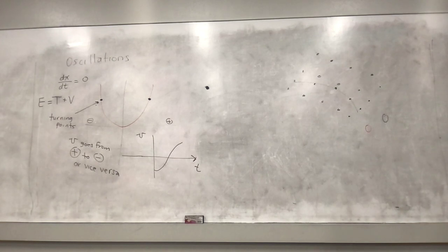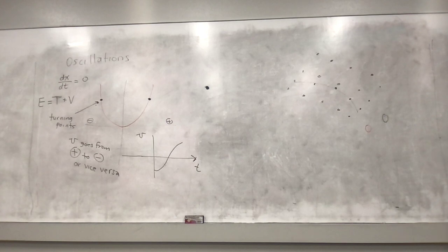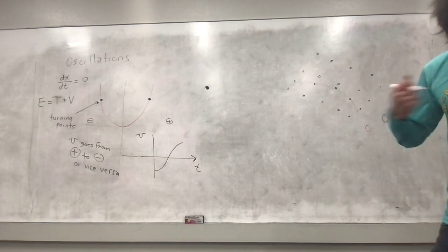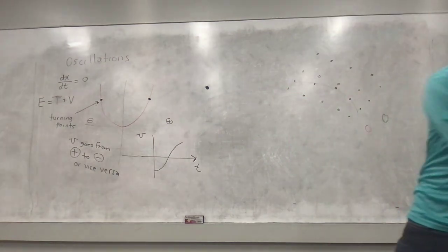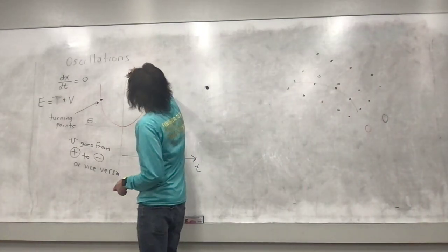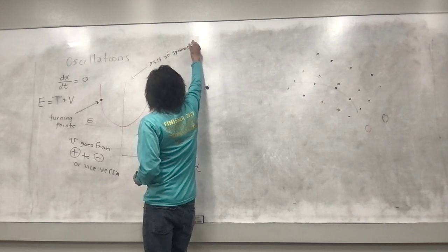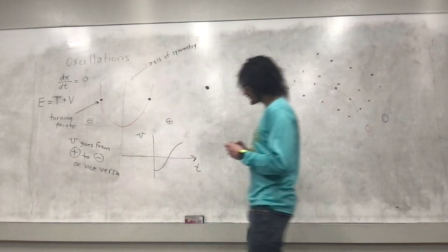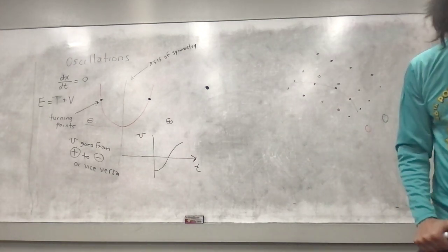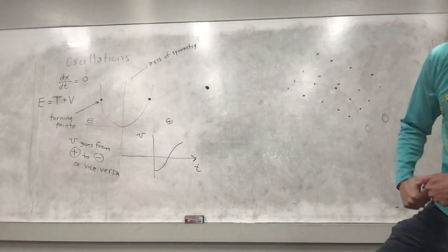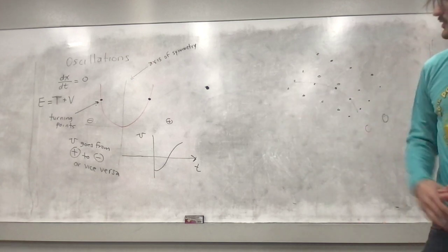A few things I wanted to mention about these parabolas. Parabolas have an axis of symmetry — this one. And they are symmetric about that axis. If it is centered at zero, what is the equation of the parabola?